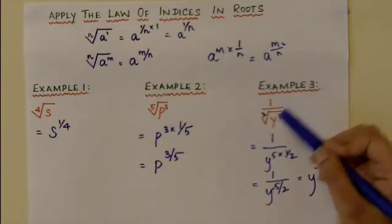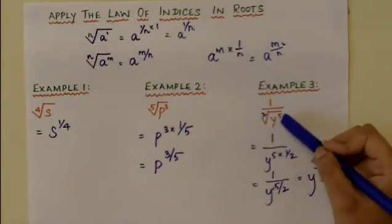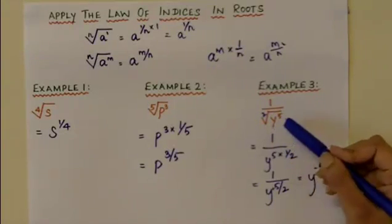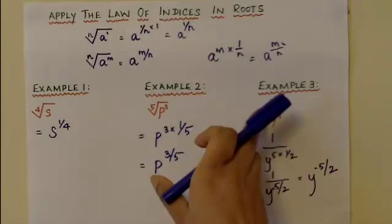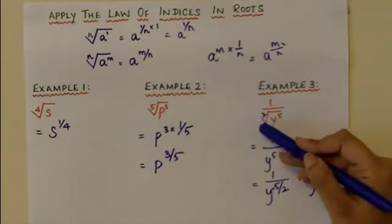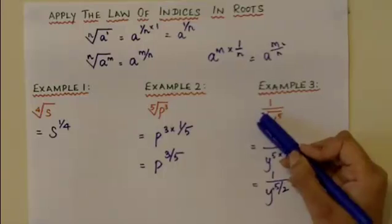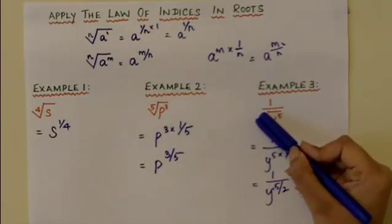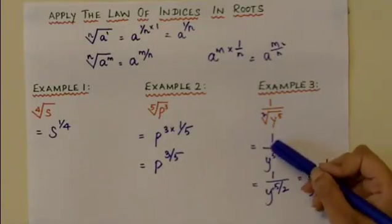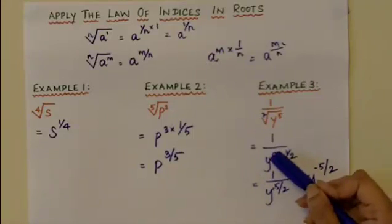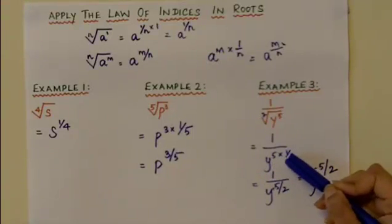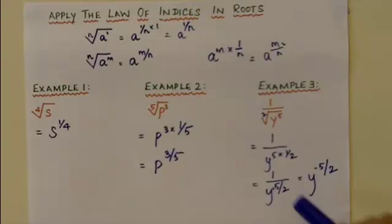The next example is square root of y to the power of 5. Normally the number 2 is not shown because it is a square root and the number is assumed to be 2. You have 1 over y to the power of 5 times half because it is a square root. Now 5 times half is given as 5 over 2.